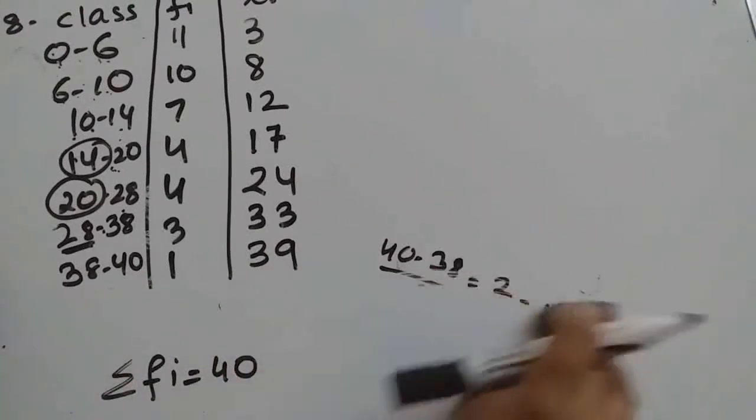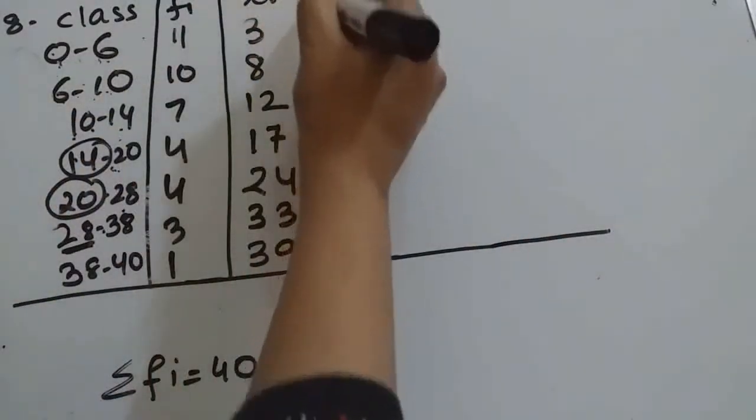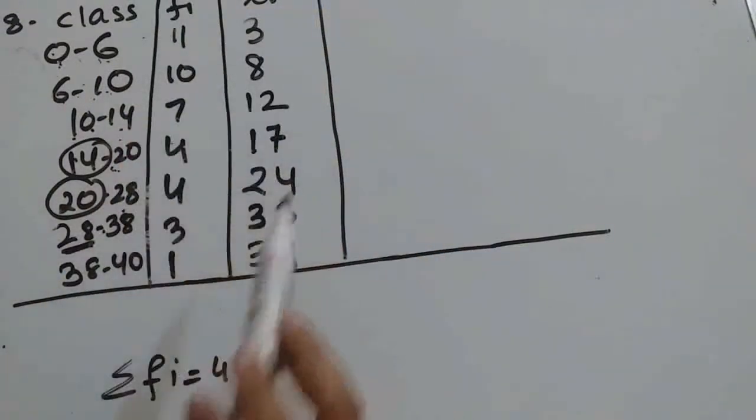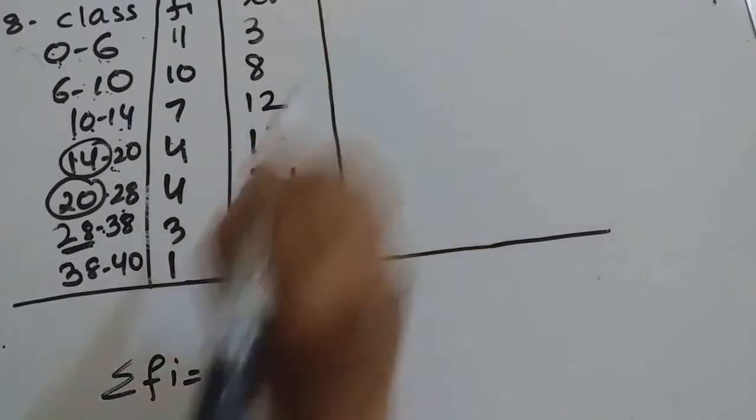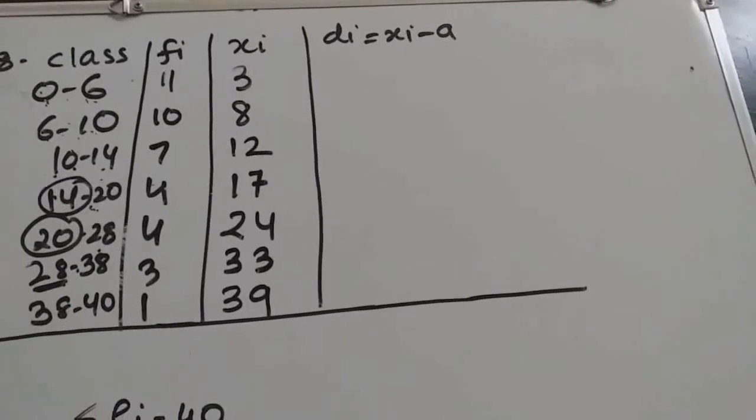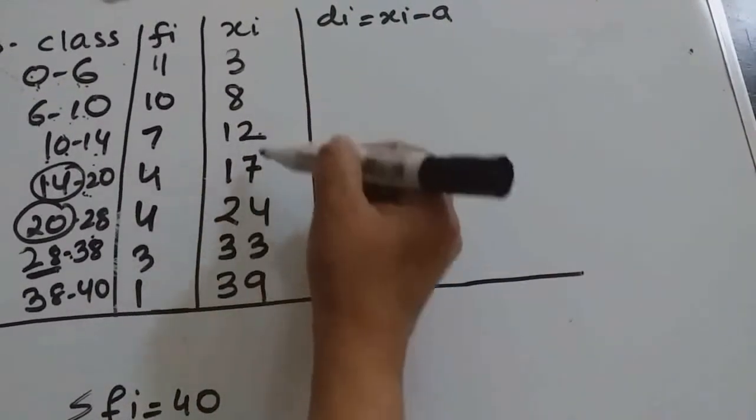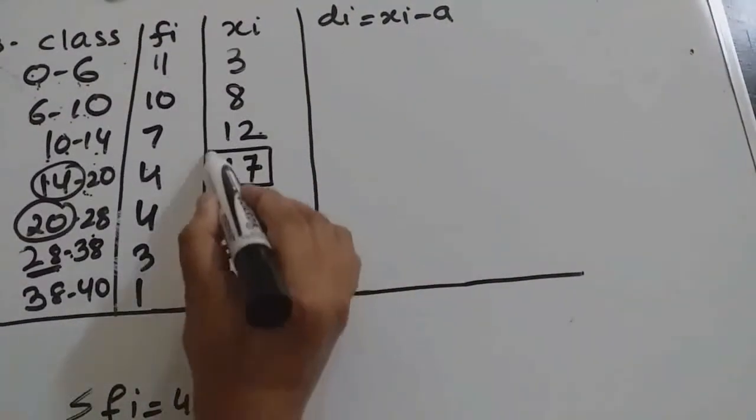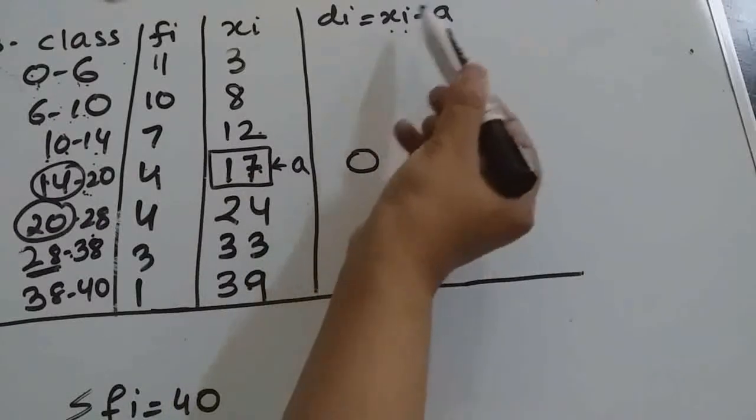See here, you can observe the xi values are not following any pattern because the class size is different. Now since xi and fi values are very large, we can use the assumed mean method. For that, we should find di. Di is what? di is xi minus A. So first we should find A here. How many observations are there? Total 7. So the fourth value you can take as A. This value is A. In front of this, you can put 0. Why? Because xi is 17, A is also 17, so 17 minus 17 will be 0.